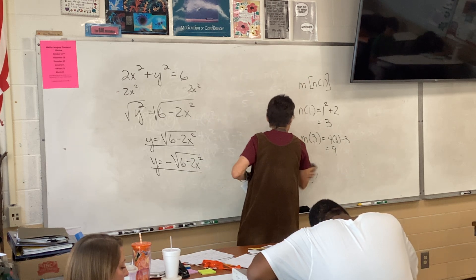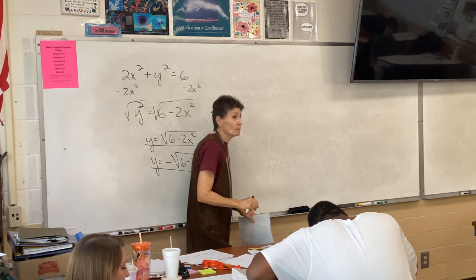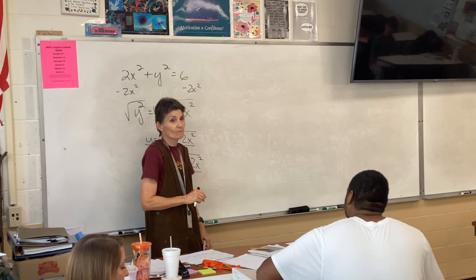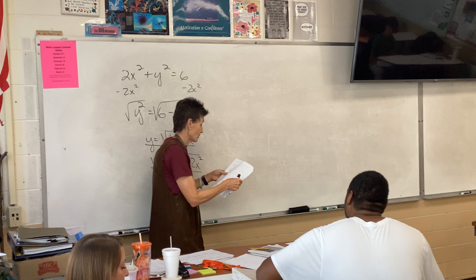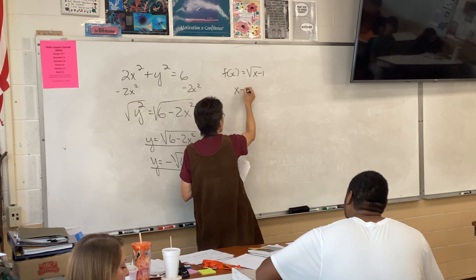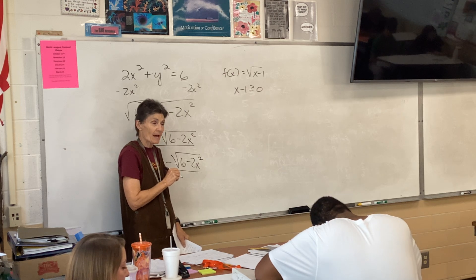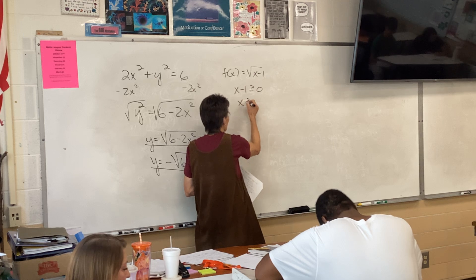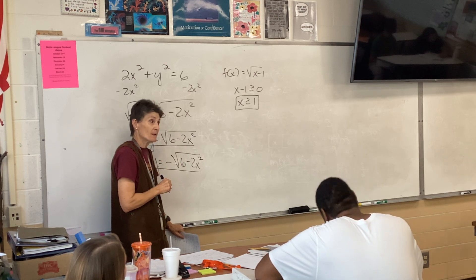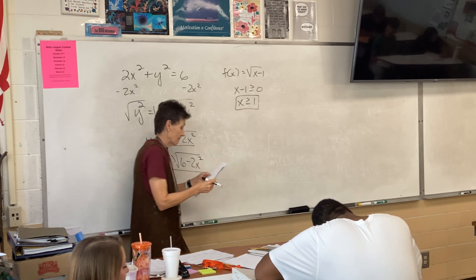Domain — what pops into your head when I say domain? The denominator cannot be zero, and whatever's under the radical has to be greater than or equal to zero. Let's look at the first problem: it has a radical, so whatever is under the radical has to be ≥ 0. That means x has to be ≥ 1, and that's our answer — I can pick any x as long as it's ≥ 1.